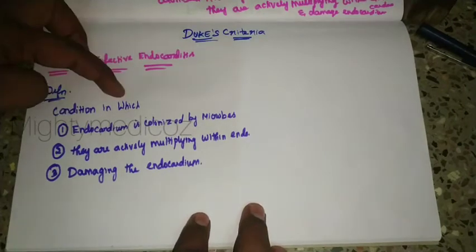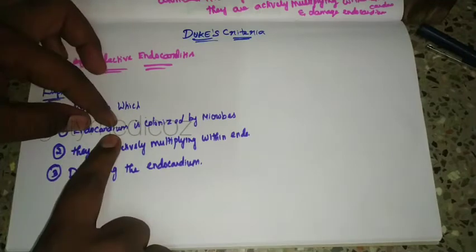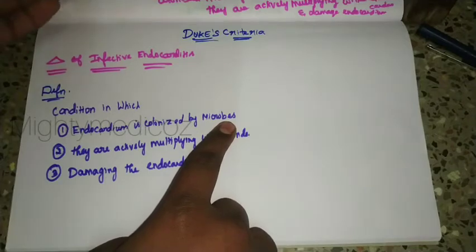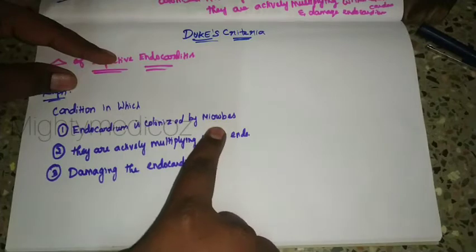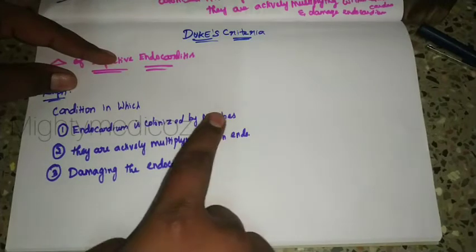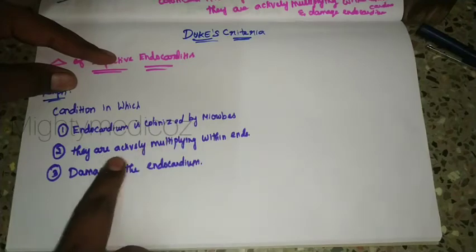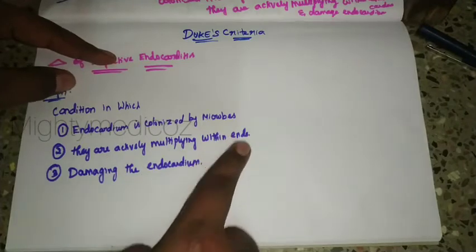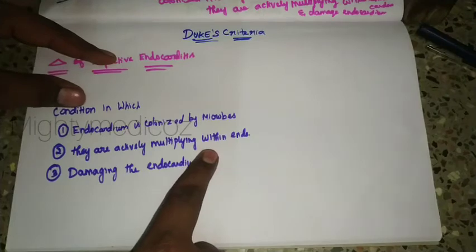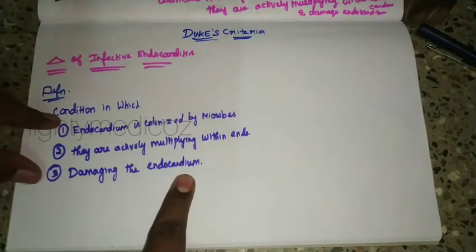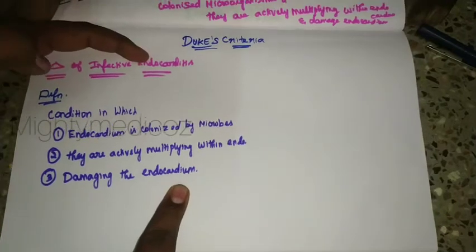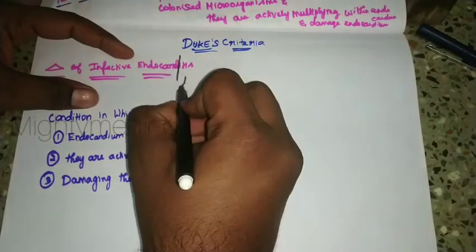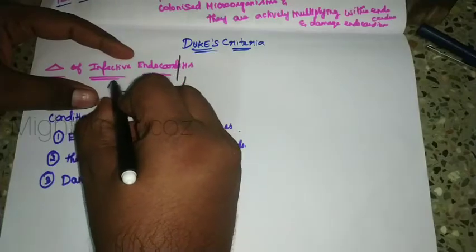Infective endocarditis is a condition in which the endocardium in the heart is colonized by microbes — either bacteria or fungi. The first condition is that the microbes colonize the endocardium. The second condition is that they are actively multiplying within the endocardium. The third condition is that they are actively damaging the endocardium. This condition, where all three are satisfied, is called infective endocarditis — inflammation of the endocardium due to infection by microbes.